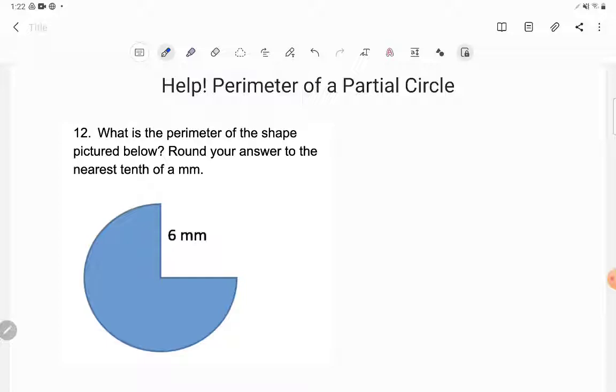Let's take a look. It says "What is the perimeter of the shape pictured below? Round your answer to the nearest tenth of a millimeter." So what are they asking me to find? They're asking me to find the perimeter of a shape.